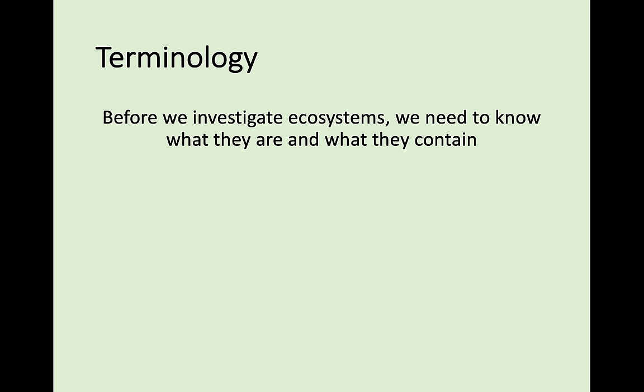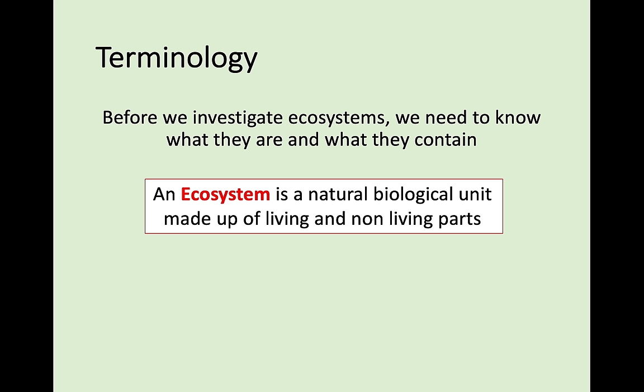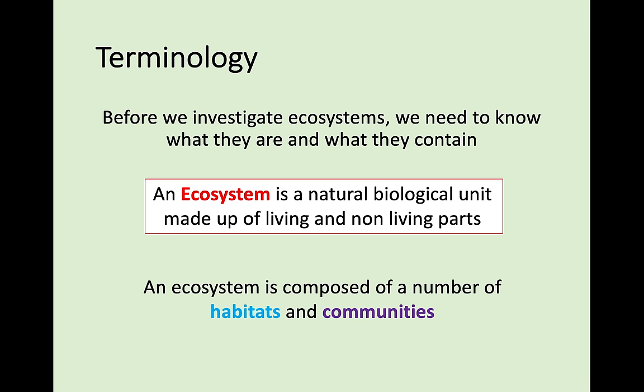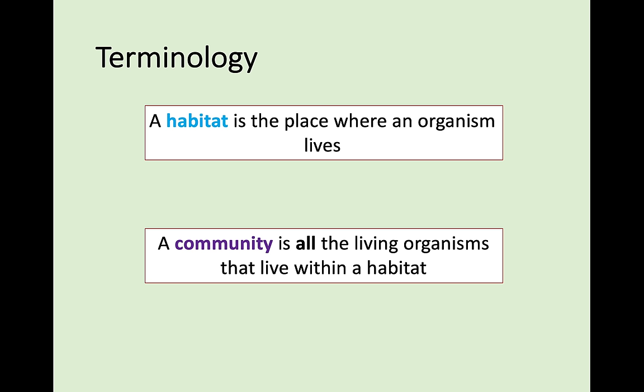Next, before we can investigate what ecosystems actually mean, an ecosystem is a natural biological unit made up of living and non-living parts. All the living and non-living things that work together make up an ecosystem. The ecosystem is composed of a number of different habitats and communities. Habitats are where an organism lives, and the community is all the living organisms that live within that habitat.